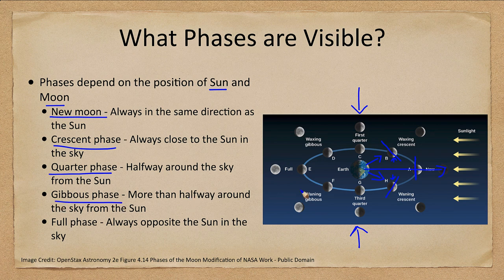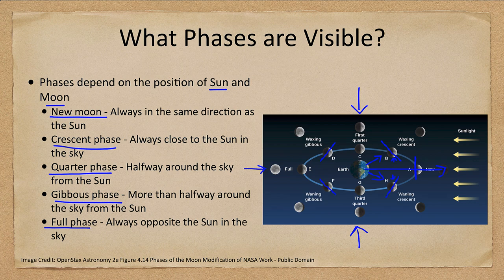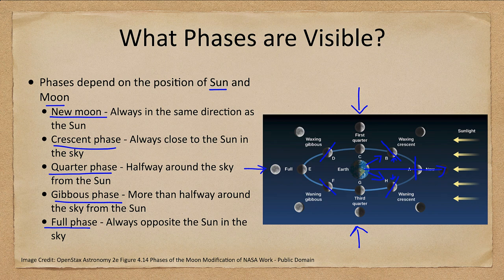Gibbous phases are more than halfway around, and you would see more than half of the portion pointing toward Earth — larger chunks of the moon illuminated. At the full phase the entire surface is illuminated, and it is always opposite to the sun in the sky, so the full moon will rise right as the sun sets, and then set as the sun rises. The waxing phases are visible in the evening sky and the waning phases are in the morning sky.